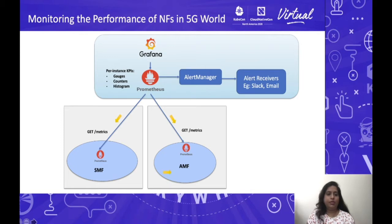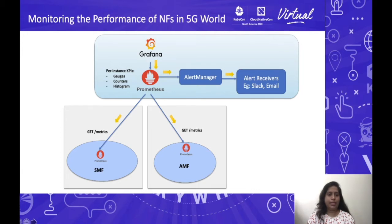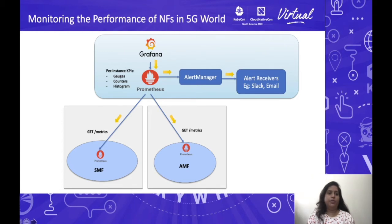Prometheus pulls the metrics and saves them in a time series database. Alert rules have expressions that use metric values with arithmetic operations. The expression evaluates at a particular time interval and fires alerts to the Alert Manager. The Alert Manager forwards alerts to alert receivers such as Slack or email. Grafana is a popular visualization tool with data source support and plugins including graph, speedometer, and table, giving end users visual representations of metric values and bringing more clarity to NF performance monitoring.